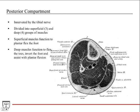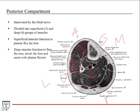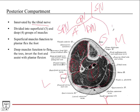The posterior compartment is the largest compartment in the leg. The tibia, fibula, interosseous membrane, and a small lateral compartment separate the anterior and posterior regions. The posterior compartment is innervated by the tibial nerve — the sciatic nerve gives off the common peroneal nerve, which branches into superficial and deep peroneal nerves, while the tibial nerve goes to the posterior compartment. Each compartment has its own nerve, making innervation easy to remember. It is divided into superficial and deep muscle groups.